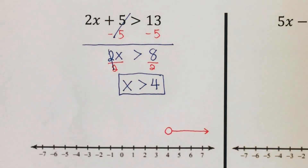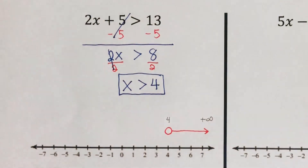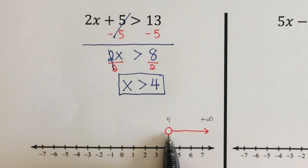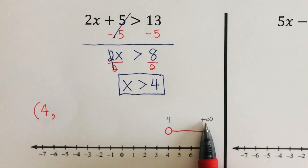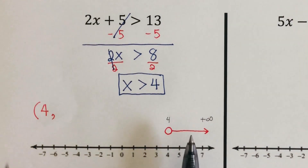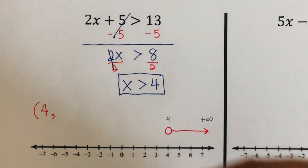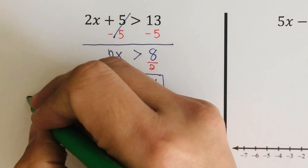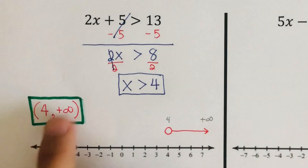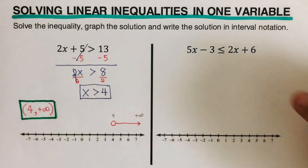Now we are going to write the solution in interval notation. This solution starts on 4 and goes all the way to positive infinity. In interval notation, we start from the leftmost part of the solution, which is 4. Since it's an open circle, we use a parenthesis. So it's parenthesis on 4, all the way to positive infinity, and since it's infinity we use a parenthesis. So the solution in interval notation is (4, +∞), and the graphing form is the open circle at 4 with an arrow to the right.